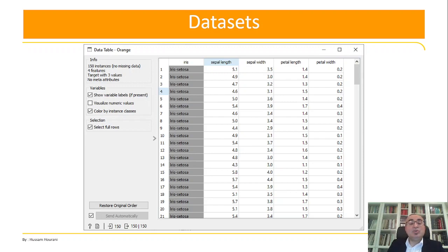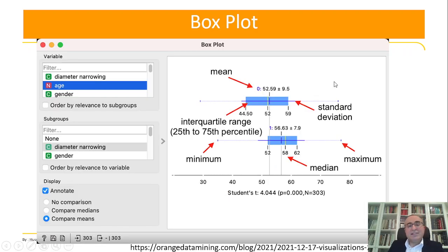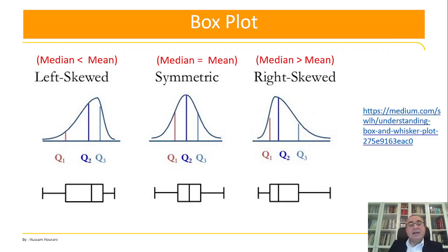This is the question we will answer today. Orange Data Mining supports many techniques to help data analysts understand their data. First, let me show you the box plot diagram. As you can see, it consists of: the mean, the standard deviation, the blue line is the median, the interquartile range between 25 to 75 percent, and the minimum and maximum values. Projecting data this way helps us understand our data from a statistical perspective.